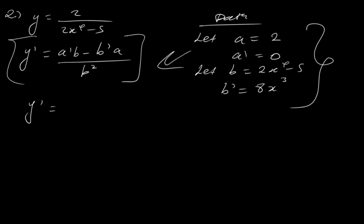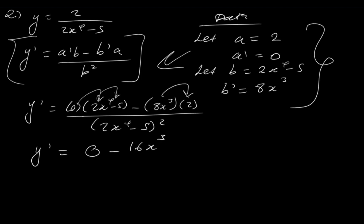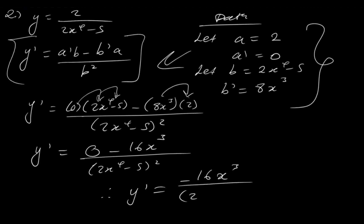Upon having these data values, we plug them back into the equation. So y prime is equal to a prime, which is 0, times b, which is 2x to the 4th minus 5, minus b prime, which is 8x cubed, times a, which is 2, over b squared, which is 2x to the 4th minus 5 squared. Now, 0 times everything gives 0. So we have negative 8x cubed times 2, which gives negative 16x cubed, over 2x to the 4th minus 5 squared. Therefore, y prime equals minus 16x cubed over 2x to the 4th minus 5 squared. This is our derivative.